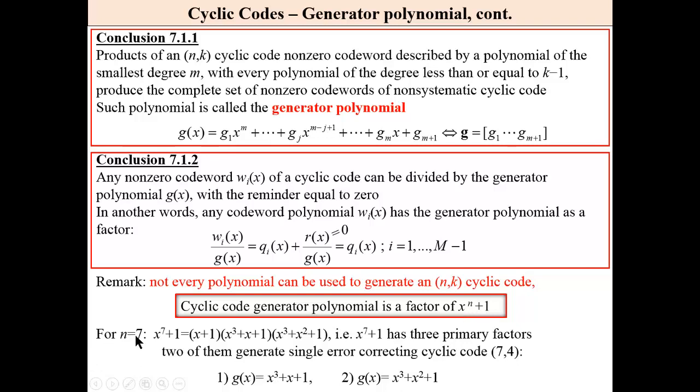For n equals 7, we have three primary factors. One, two, three, and two of them can generate a single error correcting cyclic code (7,4). Code that we have already considered during this presentation and also other (7,4) cyclic code can be generated and this generator polynomial is presented here.